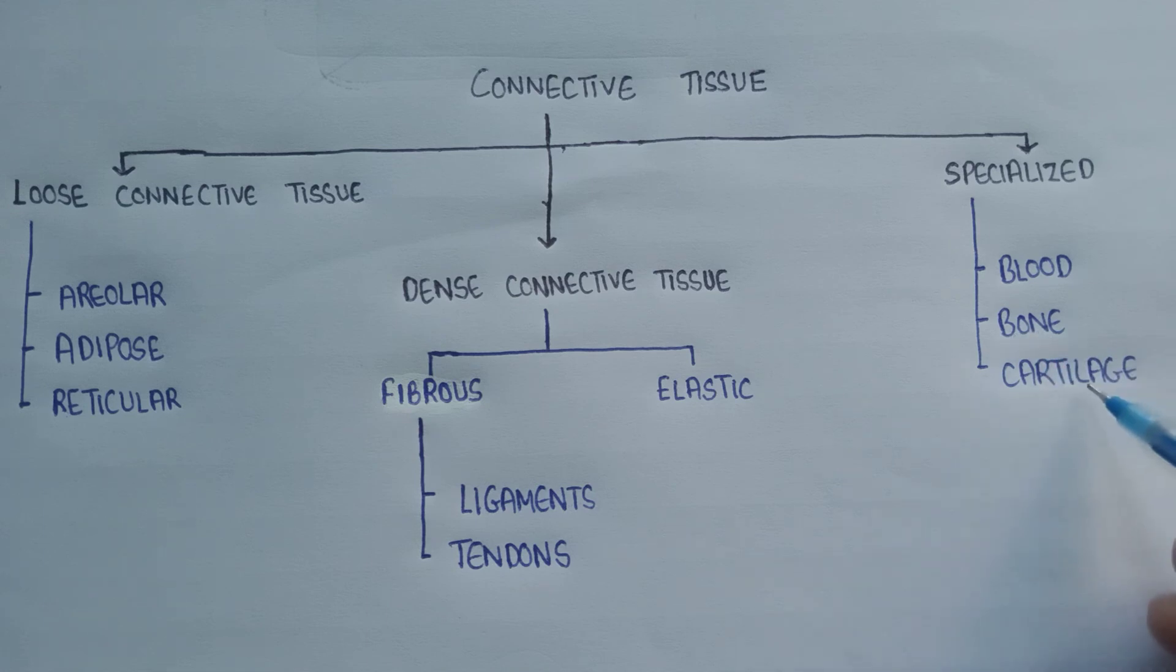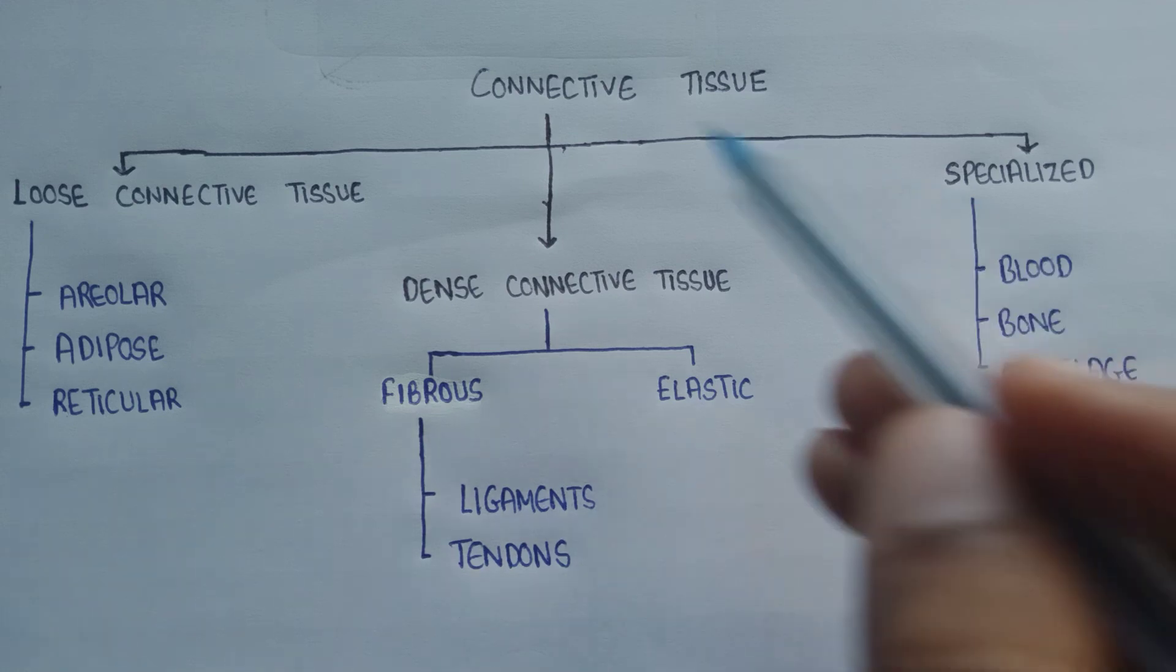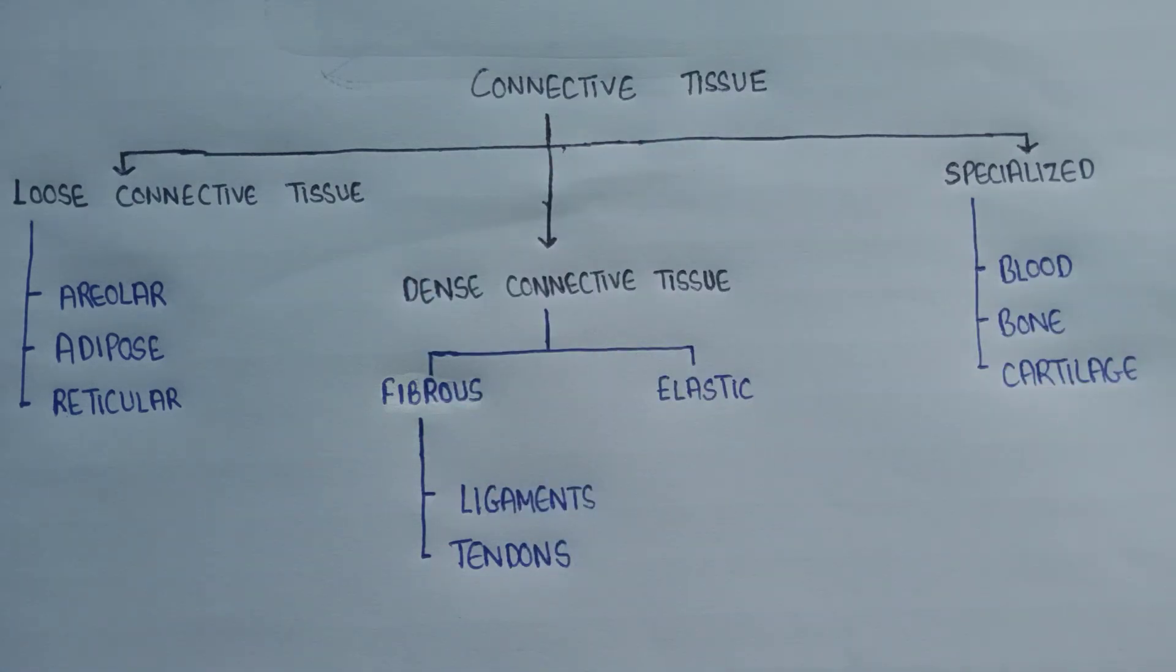Third is cartilage. Cartilage is not a hard material. It is actually pliable, means it can bend easily. The cells of the cartilage are known as chondrocytes. This is all about connective tissues.